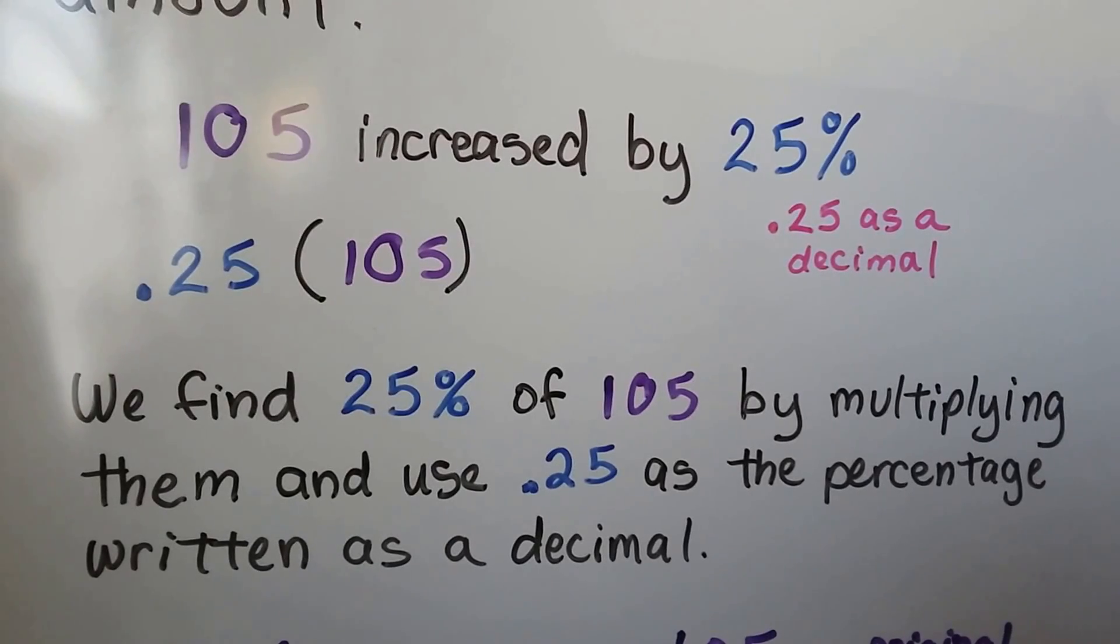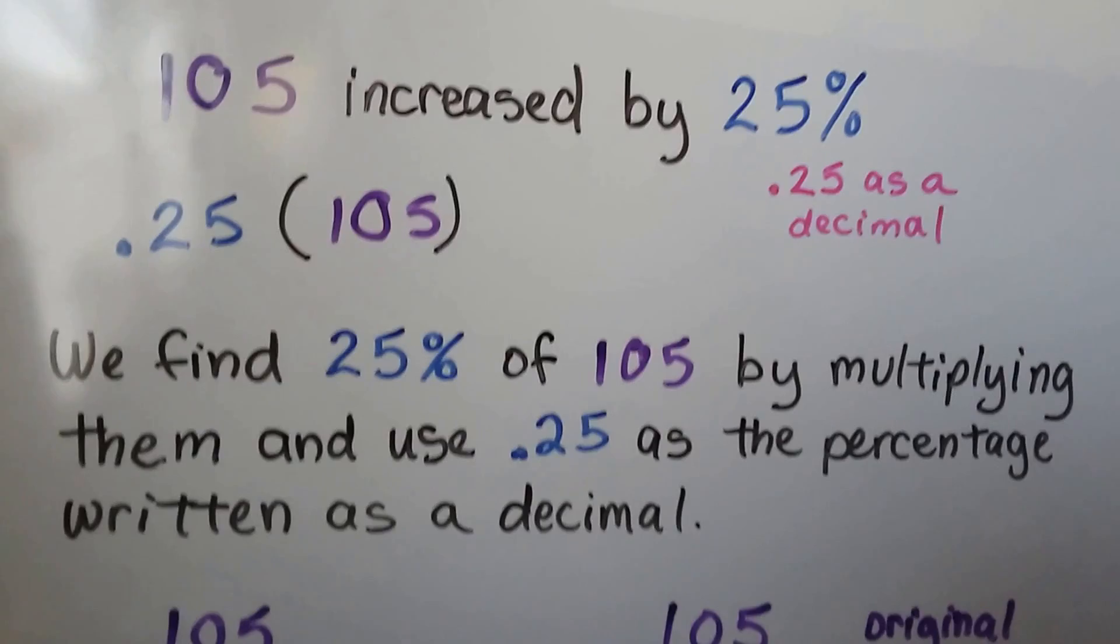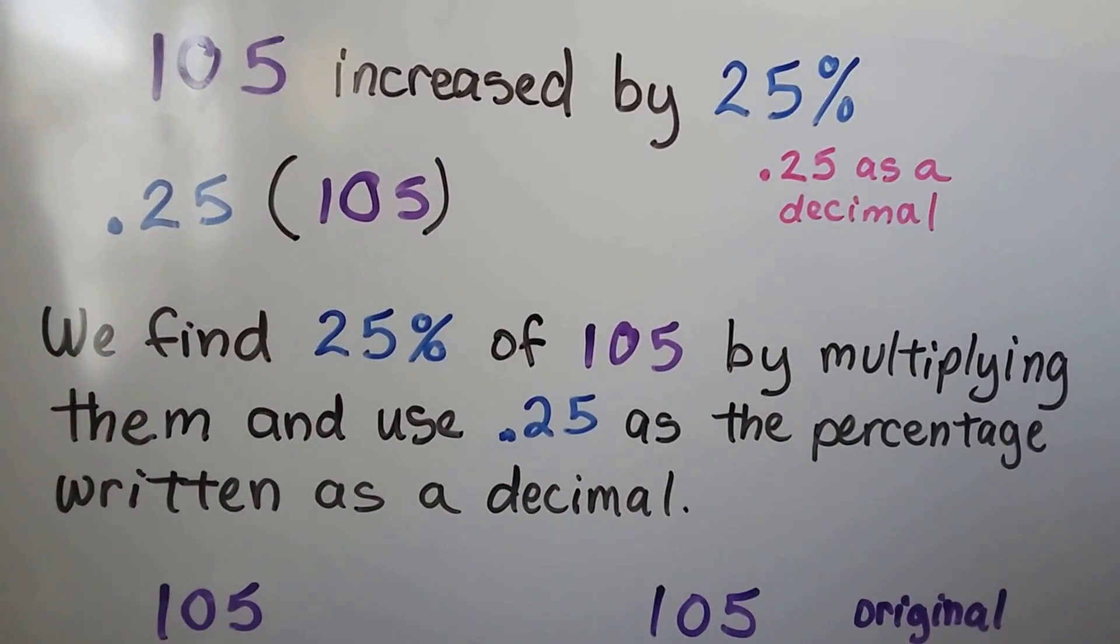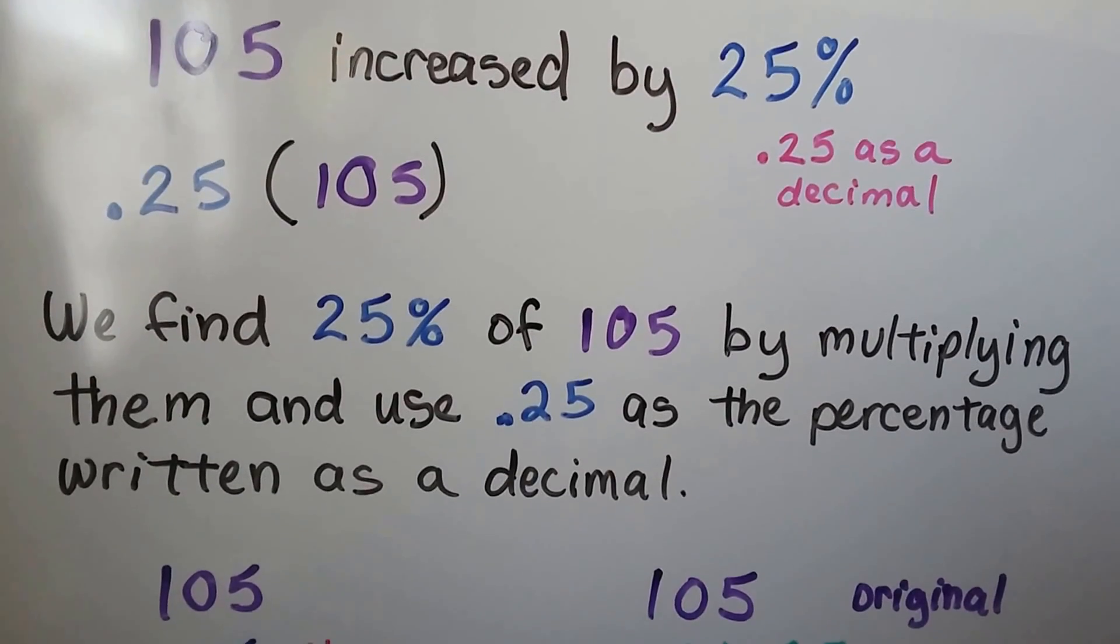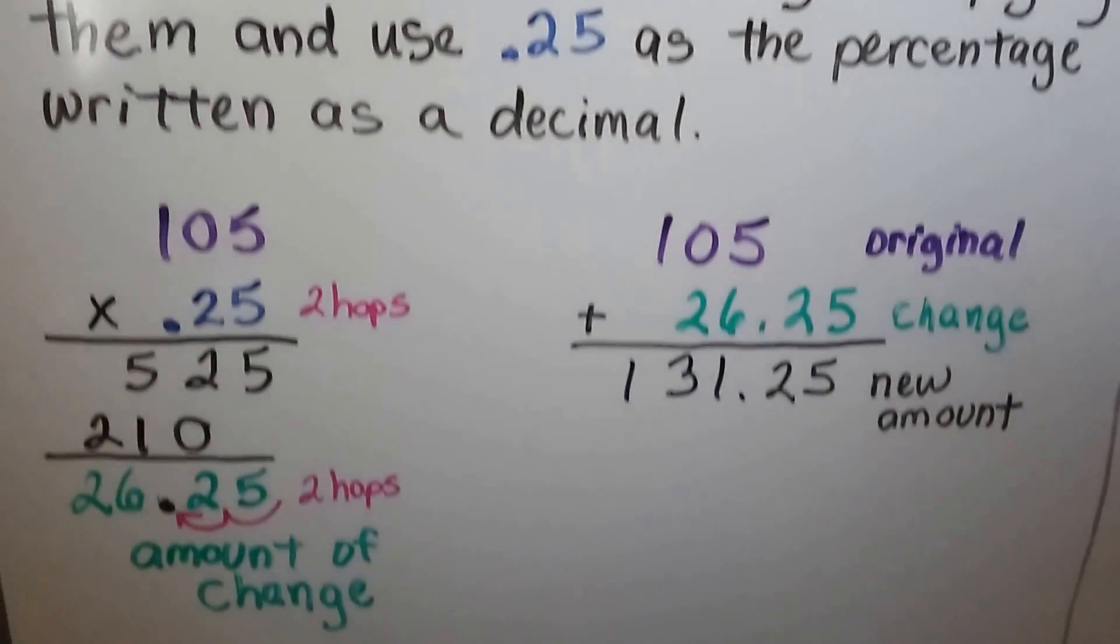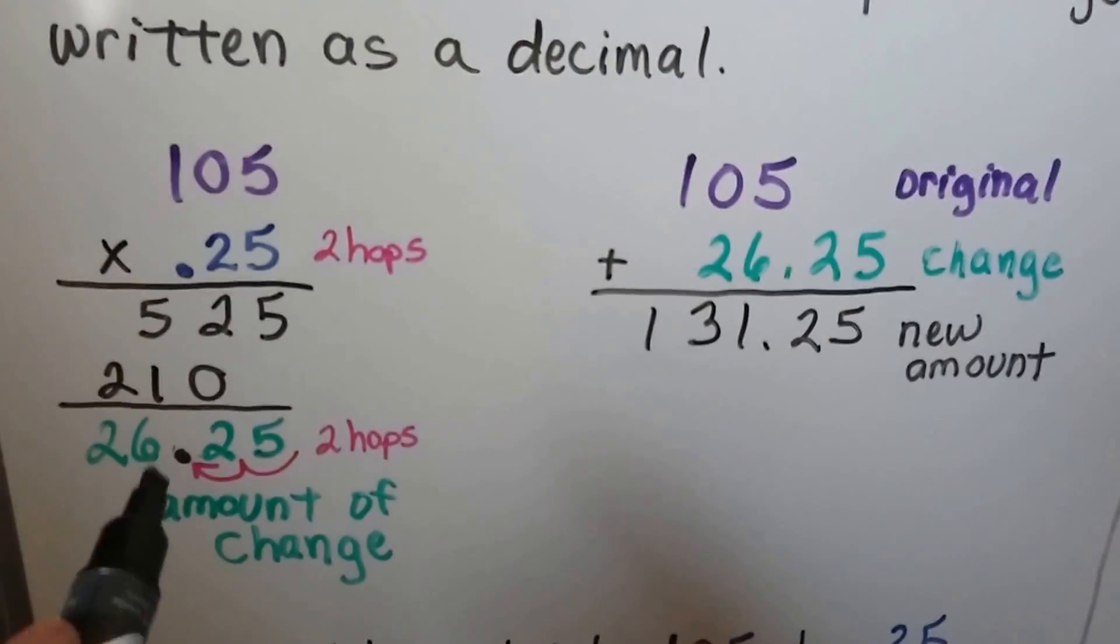105 increased by 25 percent. Remember, 25 percent is .25 as a decimal. We find the 25 percent of 105 by multiplying them, and we use that .25 as the percentage written as a decimal.